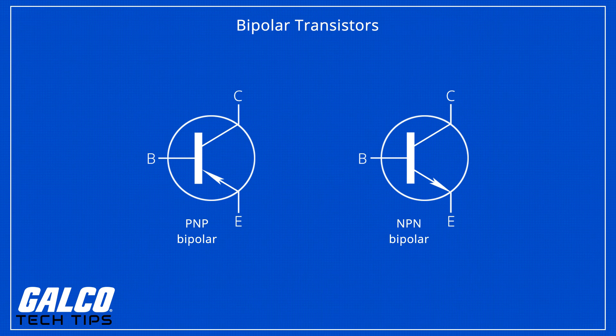There are two types of transistors with slight differences in how they're used in a circuit. A bipolar transistor will have terminals labeled base, collector, and emitter. A small current flowing between the base and emitter terminals can control or switch a much larger amount of current between the collector and emitter terminals.